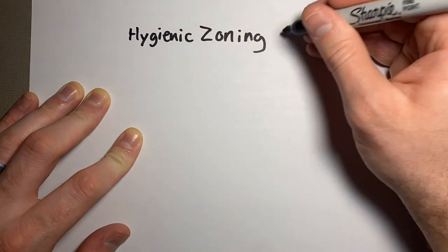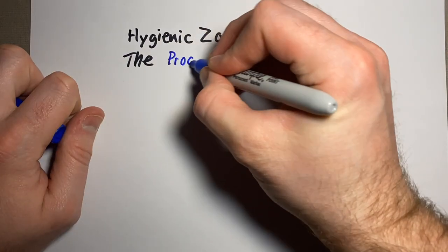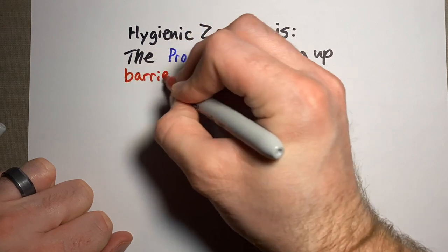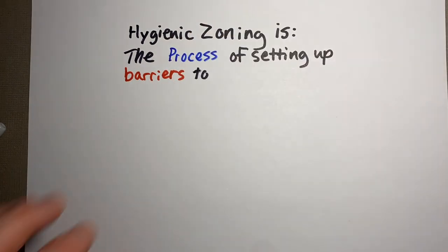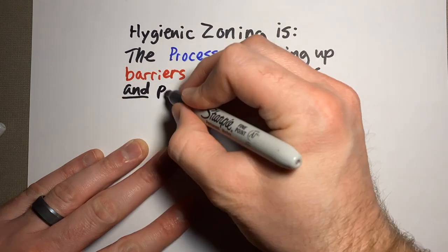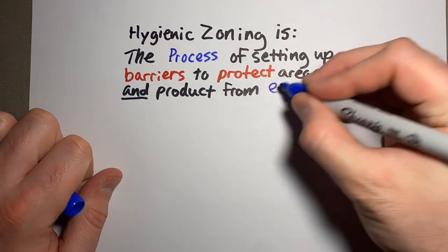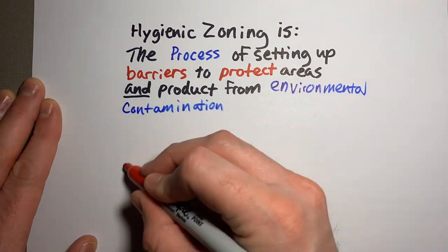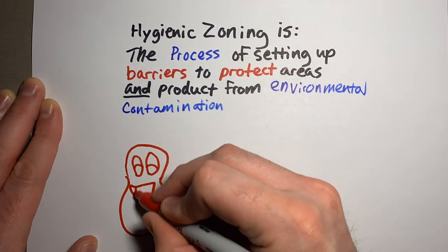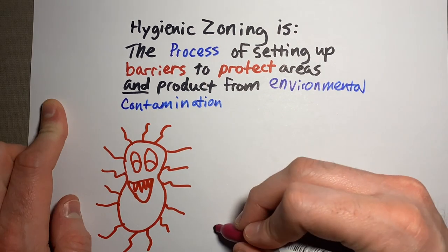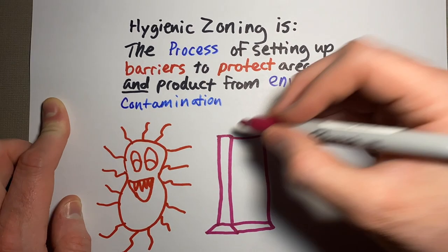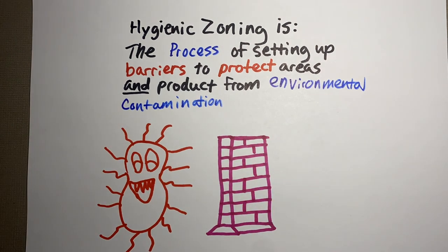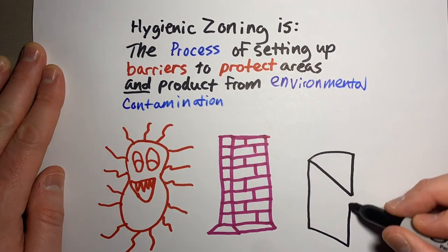To recap: hygienic zoning is all about being intentional — knowing where your most dirty areas are and separating them from where you actually make product. Whether it's thinking about barriers between dirty and cleaner areas, how your air is flowing from cleaner to dirty areas, how you are sanitizing your shoes, what people are working in what areas, what you're doing with your tools, or wheel traffic around your plant.